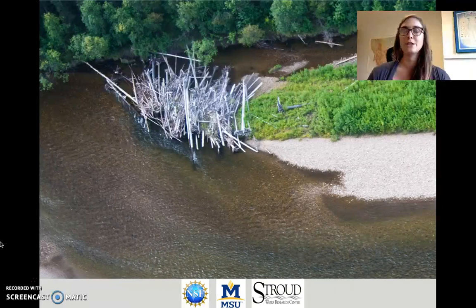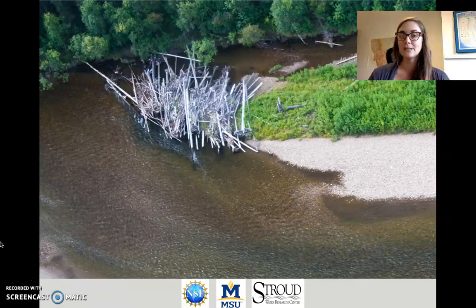Researchers have shown that some river islands start when a piece of woody debris or a tree trunk floating downstream gets stuck and begins to slow down flow around it, leading to accumulation or buildup of sediment that ultimately over time can form a large island where other vegetation can colonize and grow.